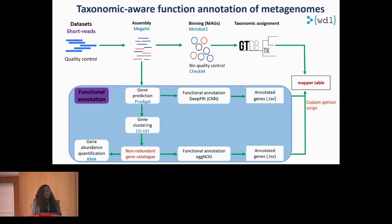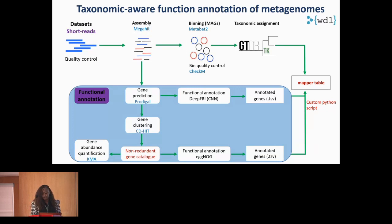We've clustered these genes based on sequence identity to generate our non-redundant gene catalog. We designed a custom Python script to create a mapping between the functionally annotated gene catalog and MAGs. Since the gene catalog is 95% non-redundant, we propagate genes within each cluster to annotate genes within MAGs, enabling further downstream analyses such as pangenome analysis and analyzing functions encoded within each individual species.